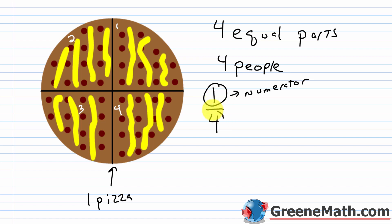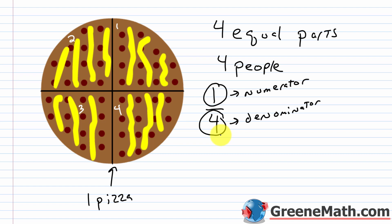The bottom number is the denominator. It tells me how many equal parts my whole amount is split up into. My one pizza has been split up into four equal parts, so my denominator is four. This middle part is called a fraction bar, and later on we're going to learn that the fraction bar represents division — we actually have the numerator divided by the denominator. For now, just think of the fraction bar as a way to separate your numerator from your denominator.